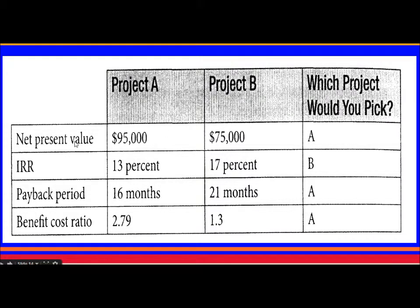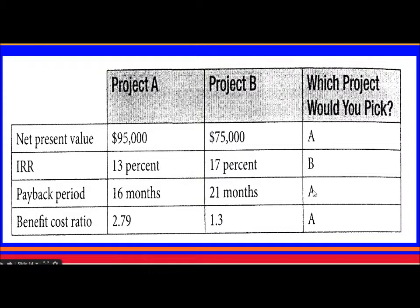Let's review examples comparing two projects. For NPV, the higher value is better — here $95,000 is greater than $75,000, so Project A is selected. For IRR, the higher rate is better — 13% leads to selecting Project B. For payback period, lower is better — 16 months is less than 21 months, so Project A is selected. For benefit-cost ratio, higher is better — 2.79 is greater than 1.3, so Project A is selected.